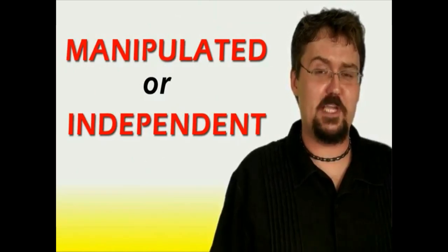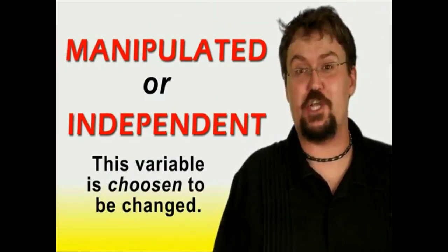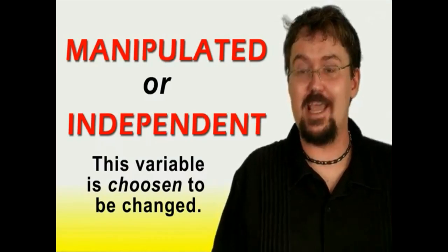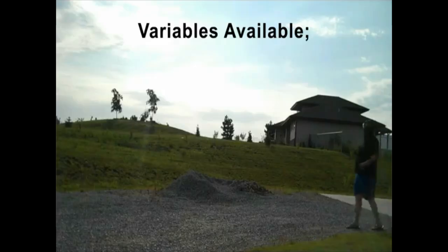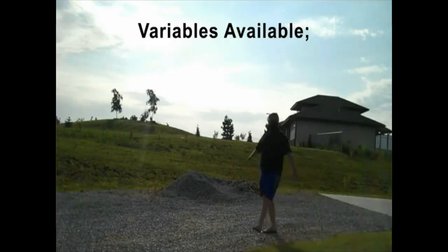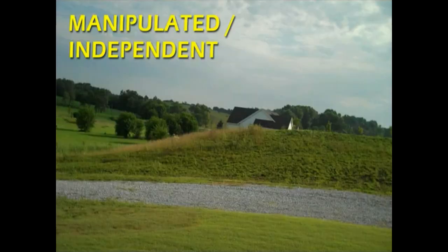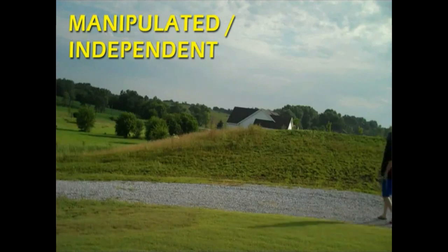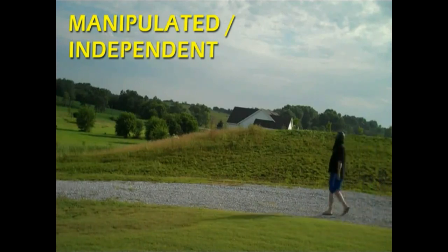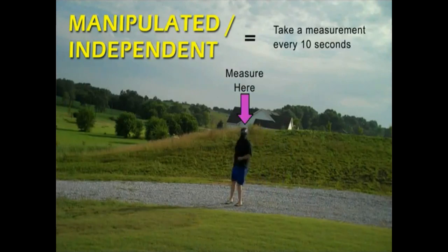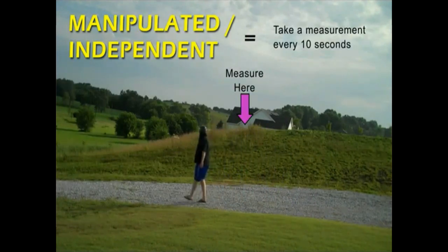This variable is the one being chosen to be changed. In the example of George's walking, measurements of his time and distance can be taken. We can choose or manipulate time by manipulating the time variable to take a measurement of distance every set amount of time.